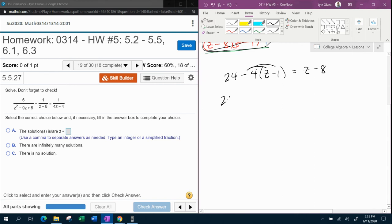So that's going to give me 24 minus 4z. Negative times a negative makes a plus 4, equals z minus 8. I then need to combine like terms. 24 plus 4 is 28, equals z minus 8. Bring down my negative 4z, and that is positive.